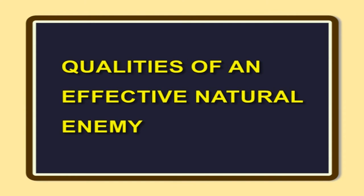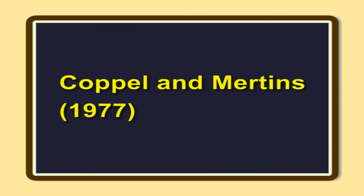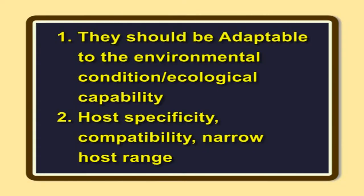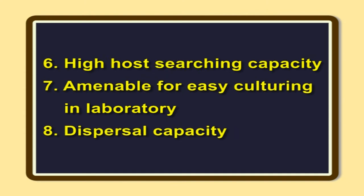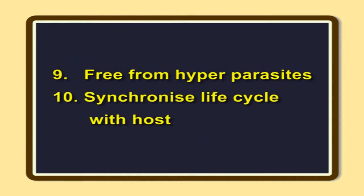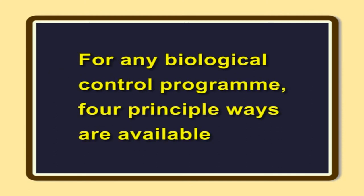Qualities of an effective natural enemy. Coppel and Mertens in 1977 proposed a list of ten desirable attributes of beneficial organisms. They should be adaptable to the environmental condition (ecological capability); have host specificity — compatibility and narrow host range; multiply faster than the host (reproductive potential — high fecundity); have a short life cycle and high female-to-male ratio; high host searching capacity; be amenable to easy culturing in the laboratory; have dispersal capacity; be free from hyperparasites; and synchronize their life cycle with the host.